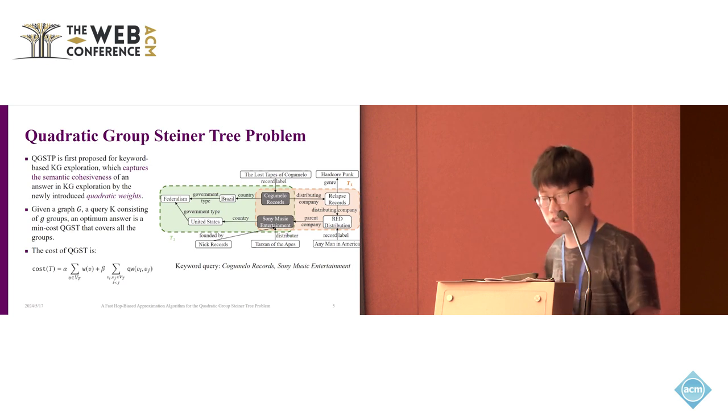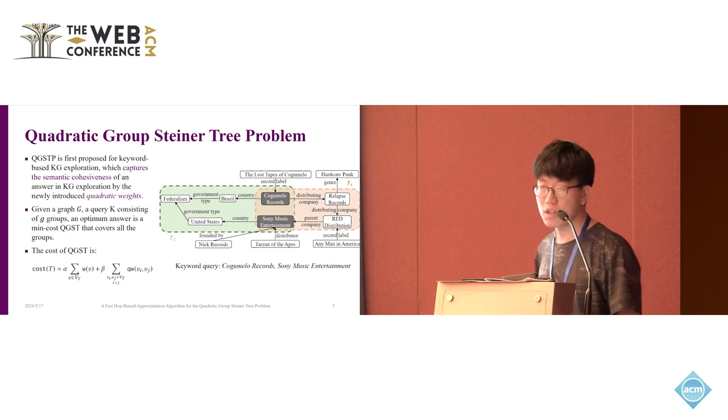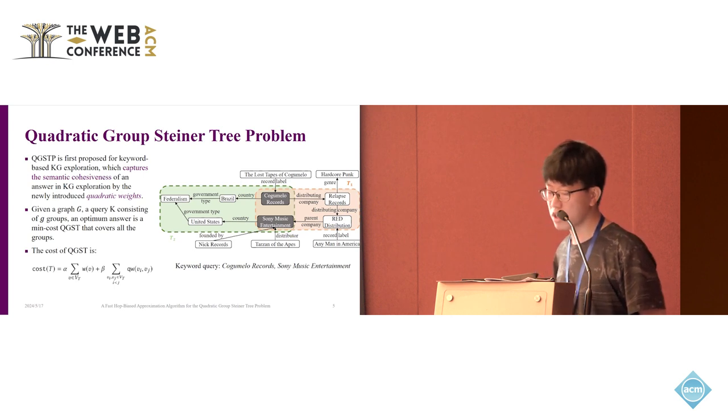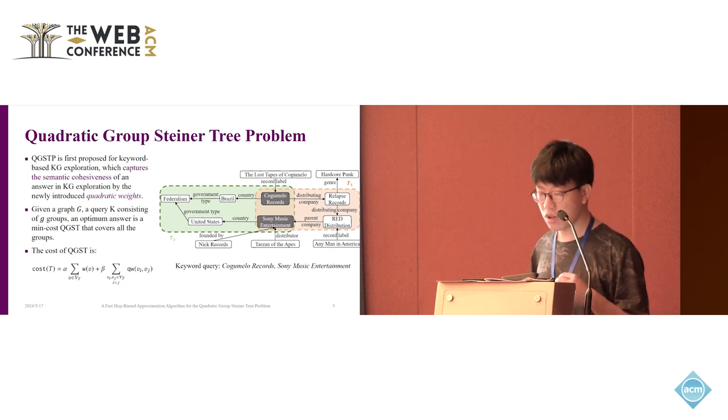The vertex weights characterize the salience of the entity. If we only consider the vertex weights and set beta as 0, then the answer of the KG exploration can be a set of salient but disparate entities. So this is also the withdrawal of the group Steiner tree problem.